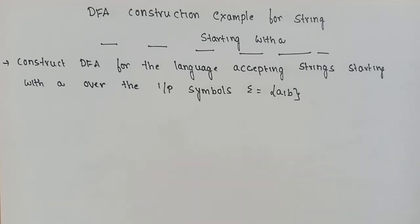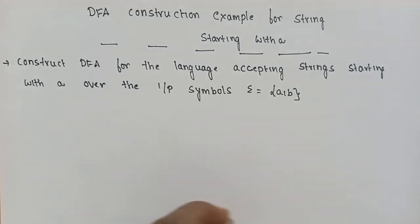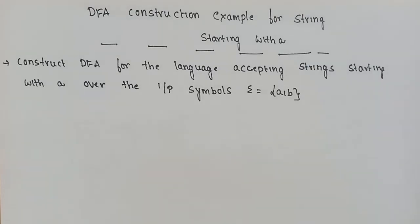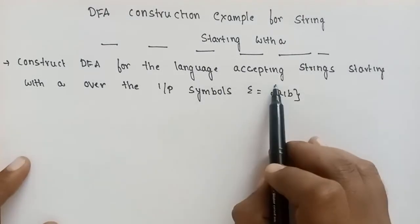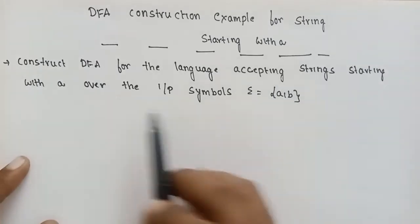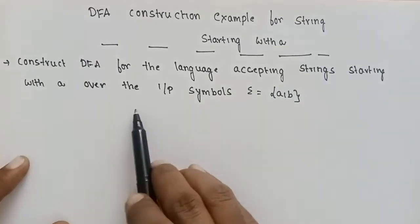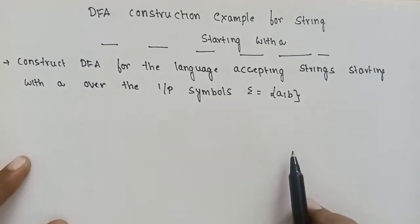We will construct a DFA that accepts strings starting with the symbol A. The input symbols are A and B.